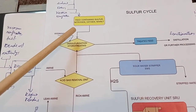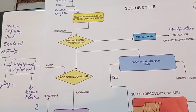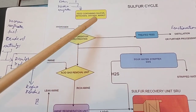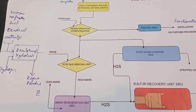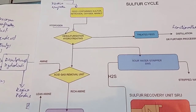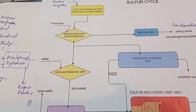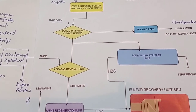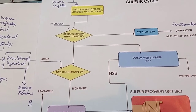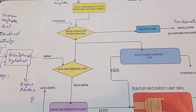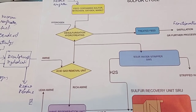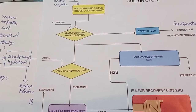Feeds such as petrol, diesel, kerosene, naphtha, or natural gas usually contain high amounts of sulfur, nitrogen, and oxygen, and also minerals. Whenever we burn anything it gives CO₂, but if the feed contains sulfur it will give sulfur dioxide. CO₂ is acceptable for the atmosphere, but SO₂ is very harmful and dangerous to the atmosphere and aquatic life.